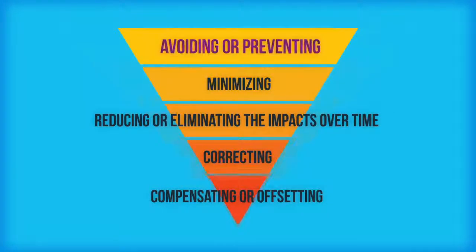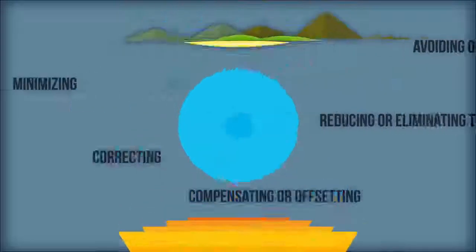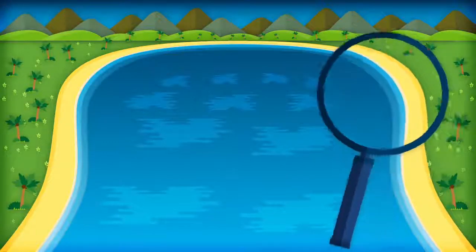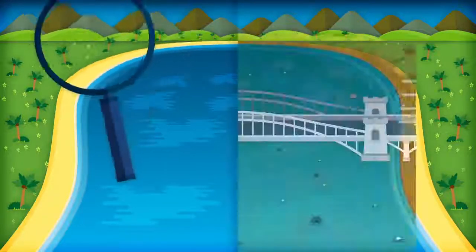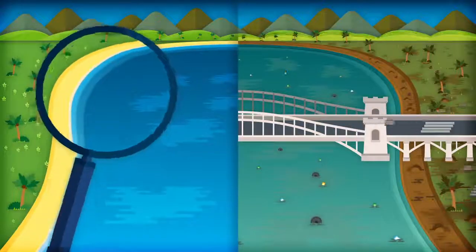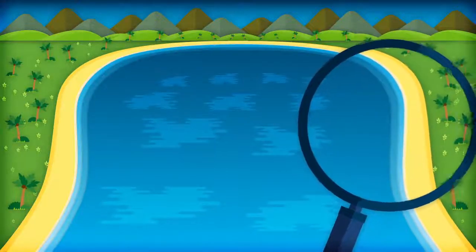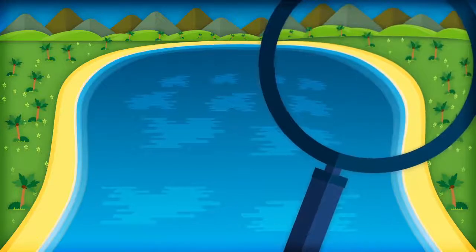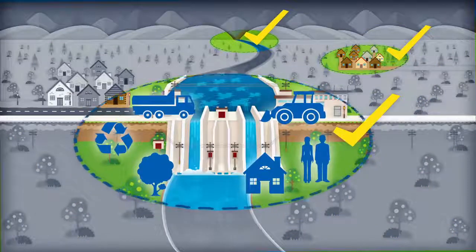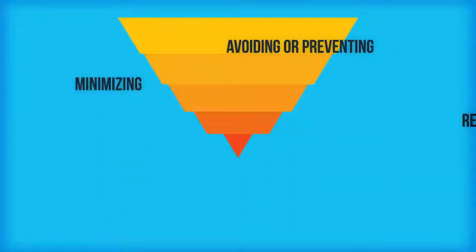It is not a one-way linear process but usually involves several iterations. As a general rule, preventive measures are always preferred to remediation measures from ecological, social, and financial perspectives. Preventive measures can be applied to both social and environmental impacts, including those on biodiversity and related ecosystem services.